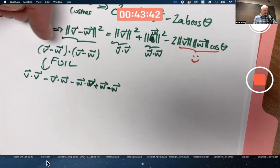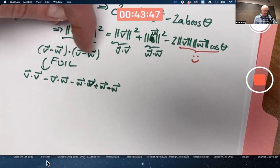V dot V first dot first. Outside dot outside. Inside dot inside. Last dot last.